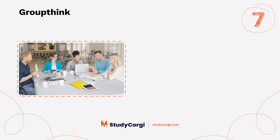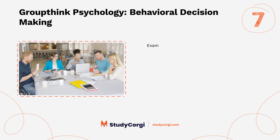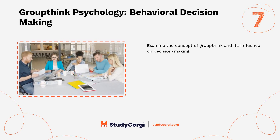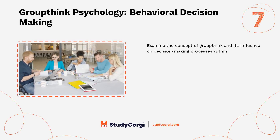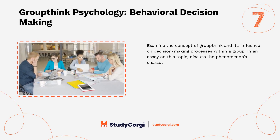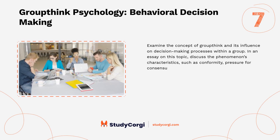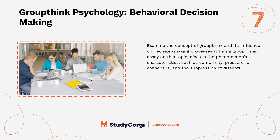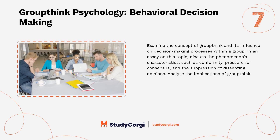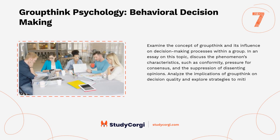Groupthink Psychology, Behavioral Decision Making. Examine the concept of groupthink and its influence on decision-making processes within a group. In an essay on this topic, discuss the phenomenon's characteristics, such as conformity, pressure for consensus, and the suppression of dissenting opinions. Analyze the implications of groupthink on decision quality and explore strategies to mitigate its adverse effects.